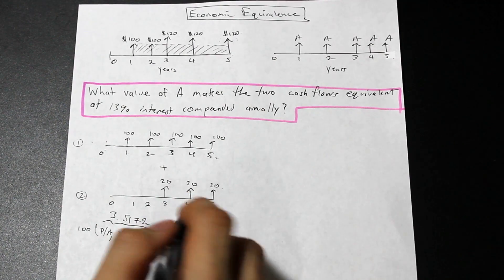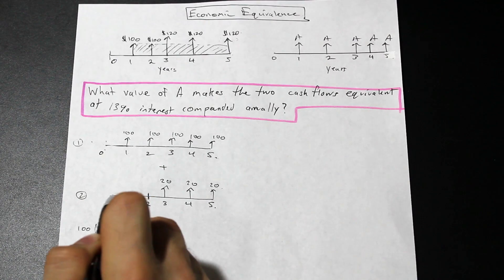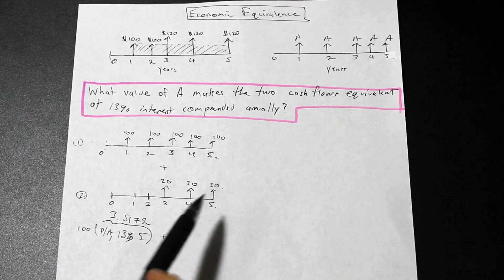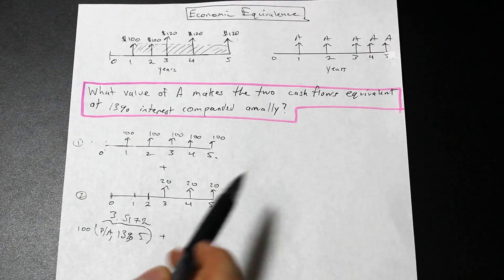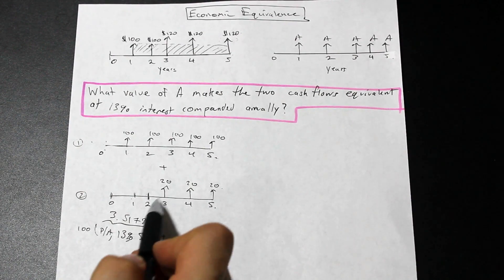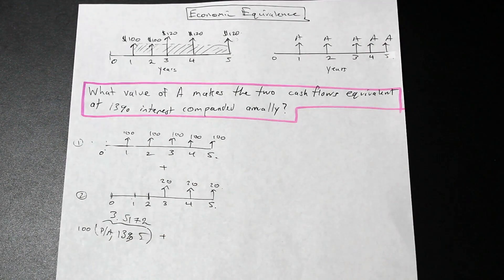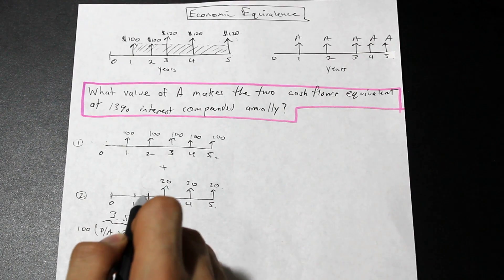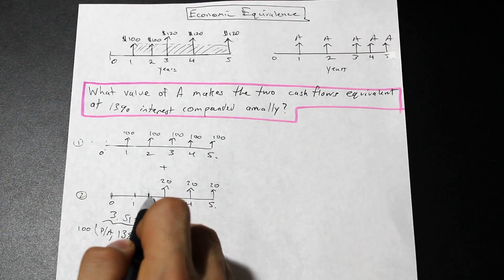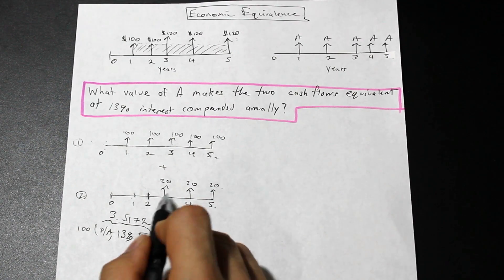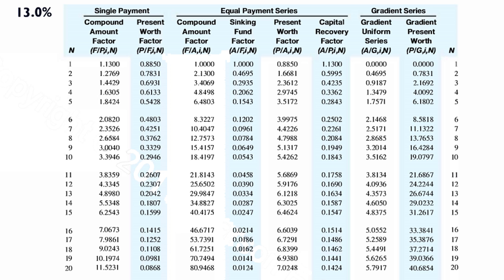Part two is trickier. We don't have payments at years one and two, so we can't apply the annuity formula directly at n equals zero. Instead, we move to year two and apply P-given-A there, because the formula must be applied as derived. We have an annuity of 20 dollars over three periods starting at year three, so: 20 times P/A(13%, 3). From the table, P/A(13%, 3) equals 2.3612. This gives the present worth at n equals 2.